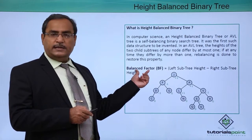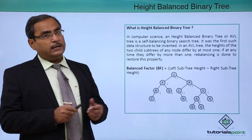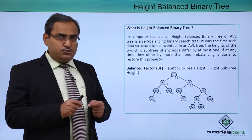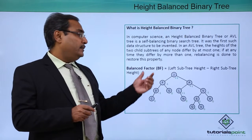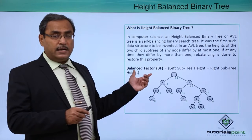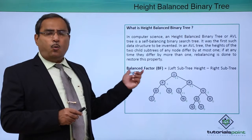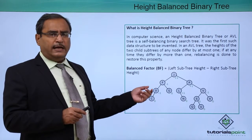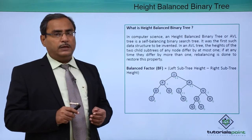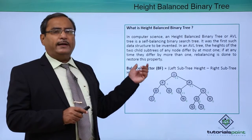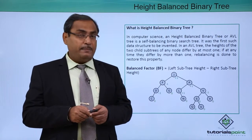If the balance factor is equal to 0, that means the left subtree height and the right subtree height are the same. If this is true for all nodes in the tree, then the tree is height balanced. Otherwise, if the difference is plus 1 or minus 1 for all nodes of the binary search tree, then you can say that this AVL tree is height balanced.